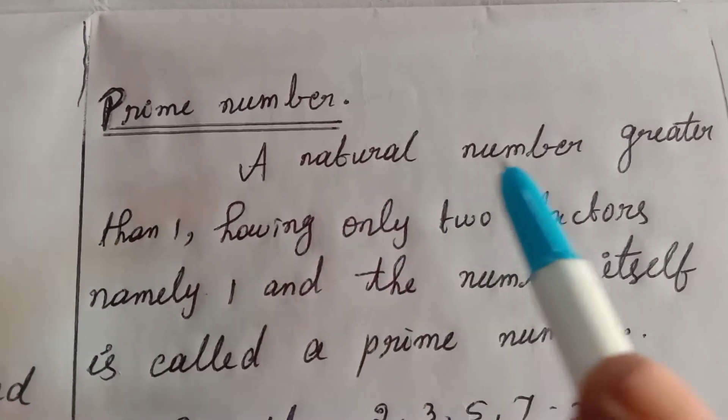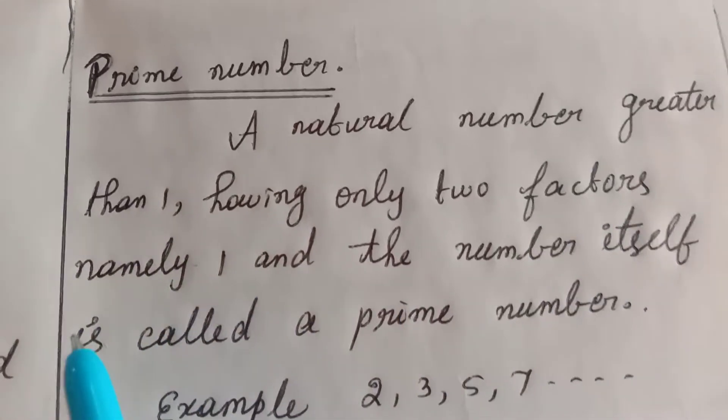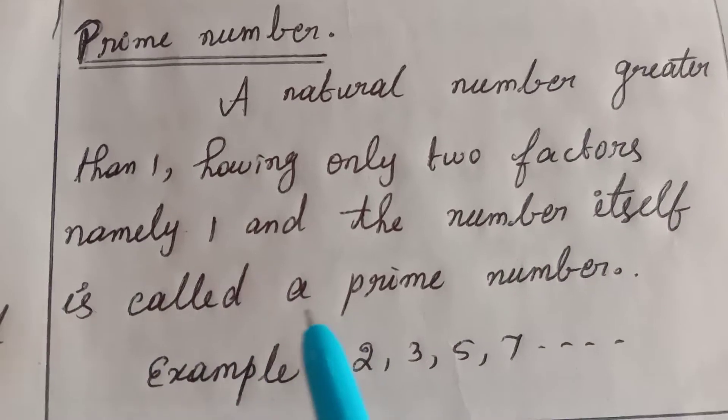So we say a natural number greater than 1, having only 2 factors, namely 1 and the number itself, is called a prime number.